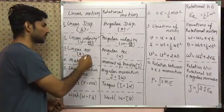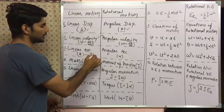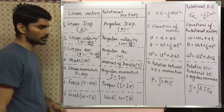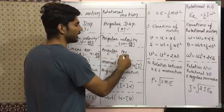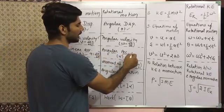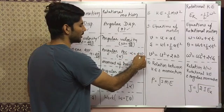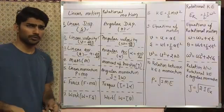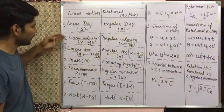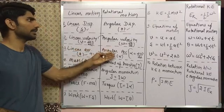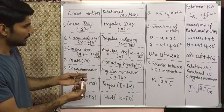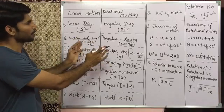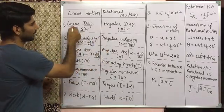The third point is linear acceleration, denoted by small 'a', where a = dv/dt — the rate of change of velocity. In rotational motion we have angular acceleration, denoted by alpha, and alpha = dω/dt, which is the rate of change of angular velocity. So in linear motion we have linear quantities and in rotational motion we have their angular equivalents — these three things are almost similar.